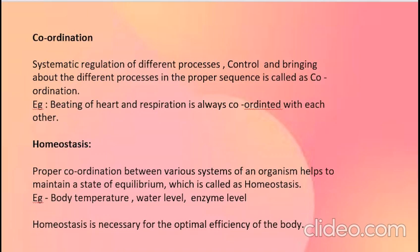We can define coordination as the systematic regulation of different processes, their control, and bringing about the different processes in the proper sequence. Now, what is homeostasis? Proper coordination between various systems of an organism helps to maintain a state of equilibrium which is called homeostasis. Examples include body temperature, water level, and enzyme level. Homeostasis is necessary for the optimal efficiency of the body.